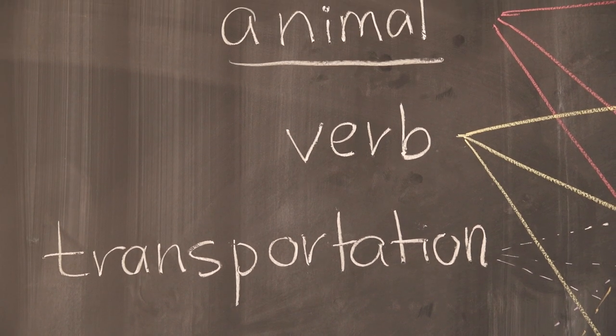On the left hand side, you have categories such as animals, verbs, transportations and so on. And on the right hand side, you have a column of boxes.